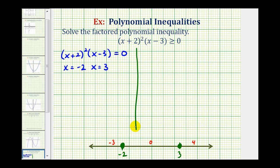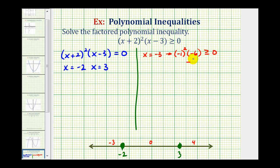When x = −3: (−3 + 2)² × (−3 − 3) = (−1)² × (−6) = 1 × (−6) = −6. Negative six is not greater than or equal to zero, so this is false. The interval on the left is not part of the solution.